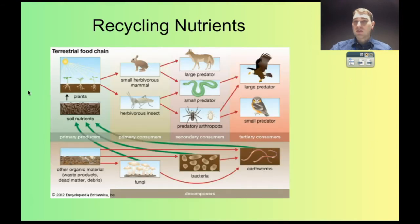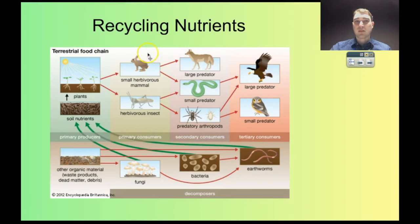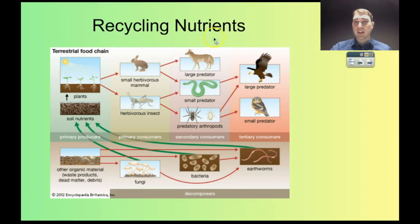Here is a terrestrial food web. We've got plants at the bottom being eaten by animals, those animals being eaten by animals, and so on. At all levels, decomposers are working as well. As soon as any of these organisms die or remains are left in the environment, they start to get broken down by bacteria, fungi, and earthworms. They release the nutrients from the organic remains of the living things back into the soil, increasing soil quality, allowing more plants to grow, which means more animals — and the cycle continues.